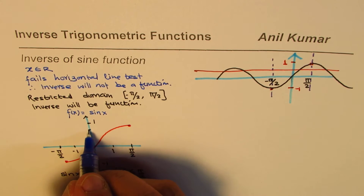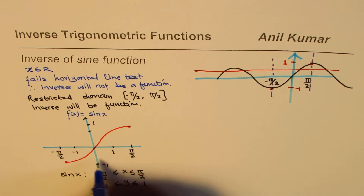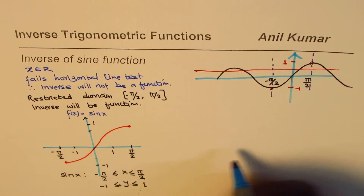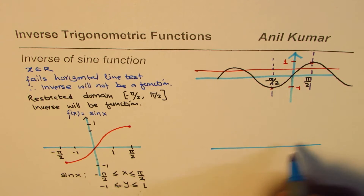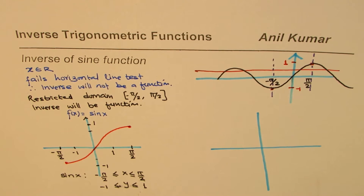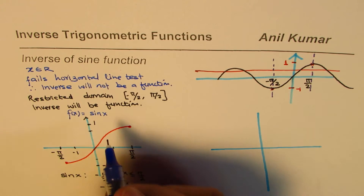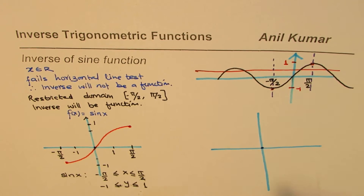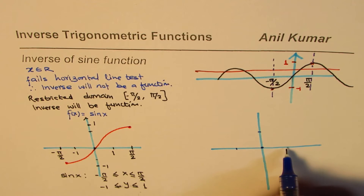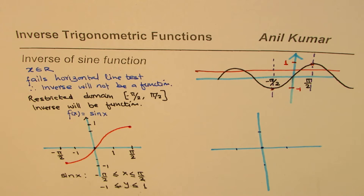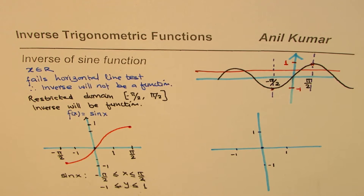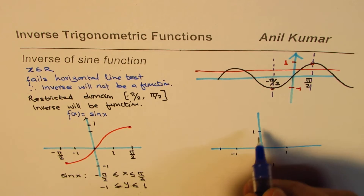Now let us sketch the inverse of this particular function. Consider the point 0, 0 — the inverse of 0, 0 will be 0, 0. On the scale, pi by 2 is slightly more than 1. The point minus pi by 2, minus 1 on the restricted sine function maps to minus 1, minus pi by 2 on the inverse.